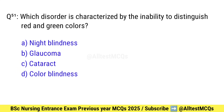Question number 51. Which disorder is characterized by the inability to distinguish red and green colors? Right option is D: Color blindness.